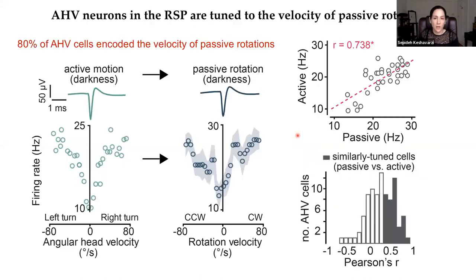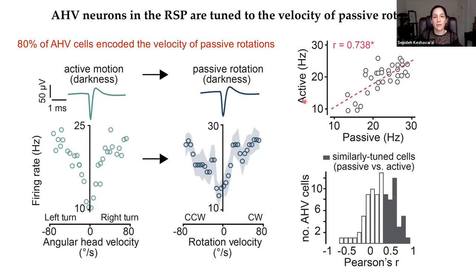To start with, the majority of AHV cells — 80% of them — also encoded the velocity of passive rotation. An example cell shown here had similar tuning between freely moving and head-fixed conditions. We quantified this by correlating passive versus active tuning and defined cells with correlations above the 95th percentile of the null distribution as similarly tuned. This was about 50% of all AHV cells recorded. This tells us that the activity of these AHV neurons is primarily driven by vestibular inputs.